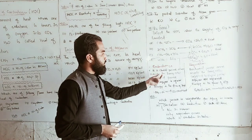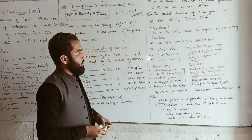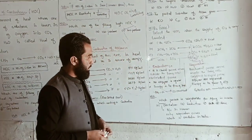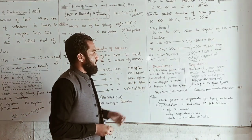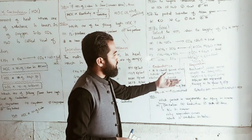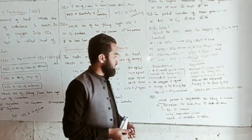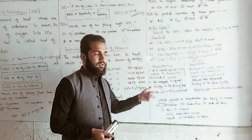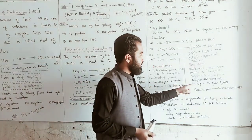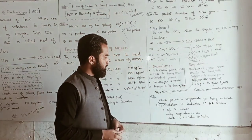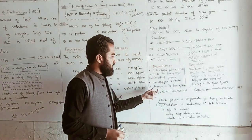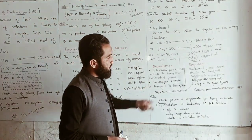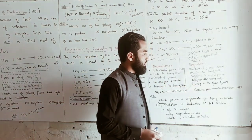Difference between combustion and respiration: First, combustion is a chemical process that occurs outside the living system, while respiration is a biochemical process that occurs inside the living system. Second, combustion is an uncontrolled process, whereas respiration is a controlled process. Third, no enzyme is required for combustion because it is not a cellular process, whereas specific enzymes are required for respiration. Fourth, in combustion, energy is released in the form of heat, while in respiration, energy is released in the form of ATP.